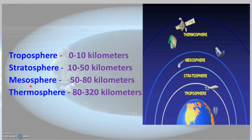The next layer is mesosphere, which is considered to be very cold, and it is in this layer where most of the meteors are burnt up. Thermosphere is the layer far away from the surface of the earth, and it is here where most of the satellites are present. These are the different layers of the atmosphere, and in each layer the composition of air is different.